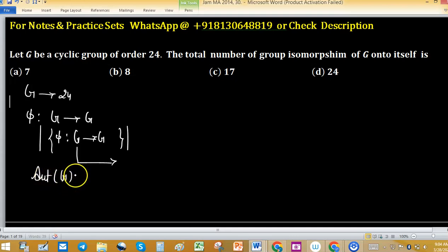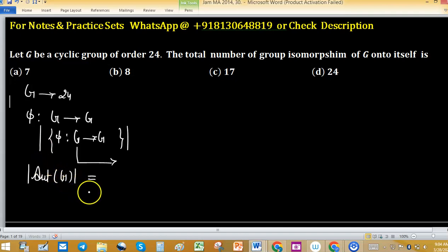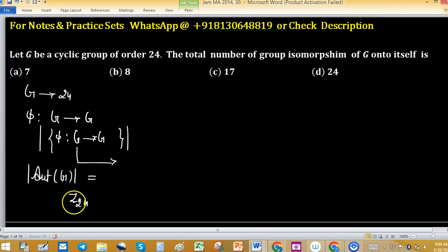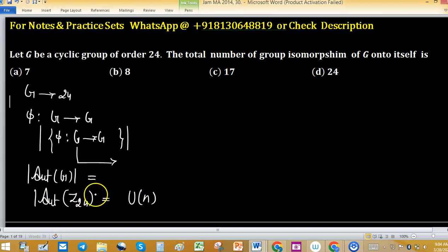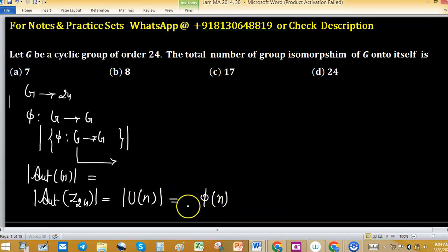The automorphism group of G — its cardinality — is what we need to find. Since the group is cyclic and of order 24, the group is finite. We can understand it as Z24. The cardinality of Aut(Z24) equals the cardinality of U(N), and the cardinality of U(N) can be found using Euler's phi function: φ(24).